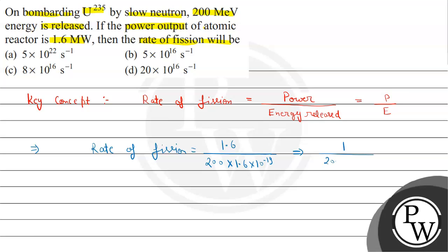1 by 200 into 10 to the power minus 19. 200 se power ko cancel karenge to yeh hoga 1 by 2 aur yahan par ho jayega minus 17, minus 17 upar jayega to plus 17. Aur 1 by 2 matlab 0.5, 10 to the power 17.